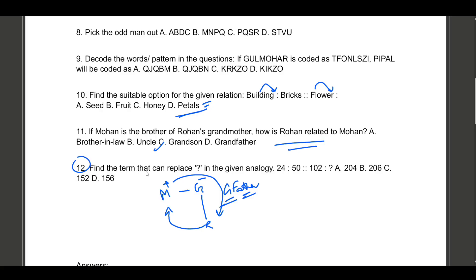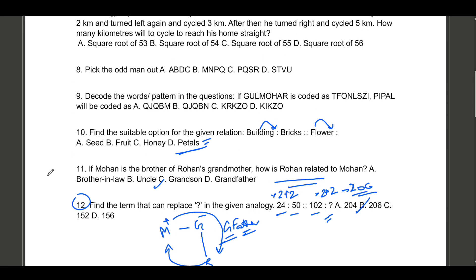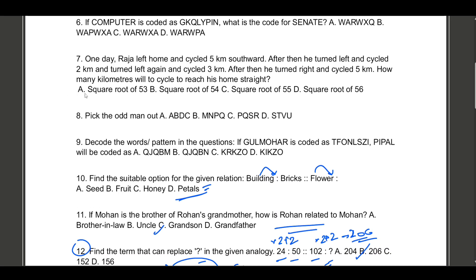Question twelve: find the term to replace the question mark in 24, 50, 102. The pattern is multiply by 2 then add 2. 24 times 2 is 48, plus 2 is 50. So 102 times 2 is 204, plus 2 is 206. Option B, 206, is the answer. That wraps up all the questions — I hope you all can do question nine on your own as well.